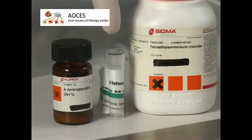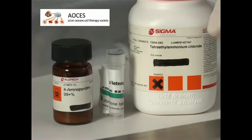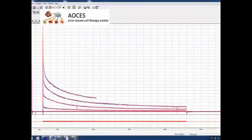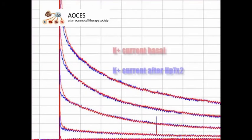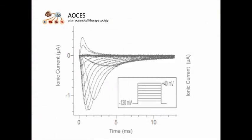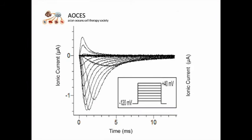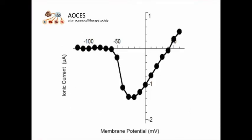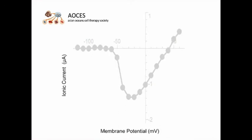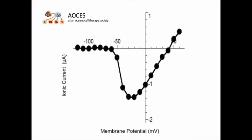The properties of a single ion channel type in any given neuron can be investigated by blocking the activity of other channels pharmacologically. A voltage step protocol is used to examine ion channel currents evoked by stepping the voltage to a series of different holding potentials. The current voltage, or IV curve, shows the voltage dependencies of current flowing through an ion channel, and provides insight into at which voltages the channel is open or closed.